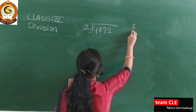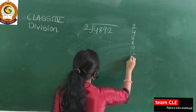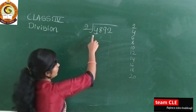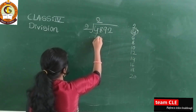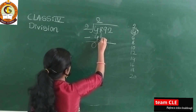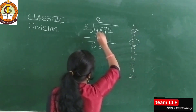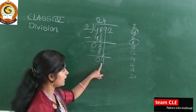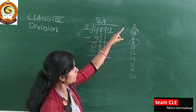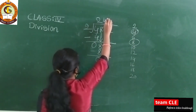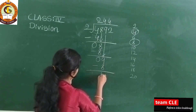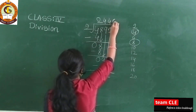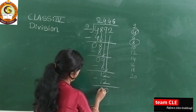Write the 2 times table: 2, 4, 6, 8, 10, 12, 14, 16, 18, 20. Take the first digit 4 — since 4 is in the 2 times table, 2×2=4. Subtract: 4 minus 4 is 0. Bring down 8: 2×4=8, subtract to get 0. Bring down 9: nearest small is 8, so 2×4=8; 9 minus 8 is 1. Bring down 2 — it becomes 12. 2×6=12. Subtract: 2 minus 2 is 0, and 1 minus 1 is 0.